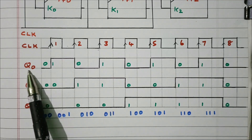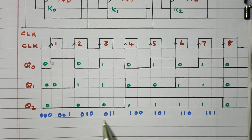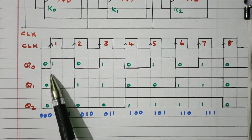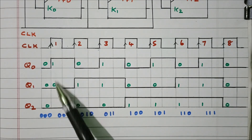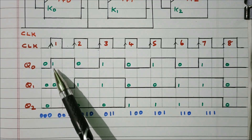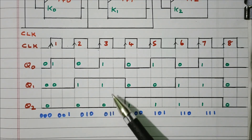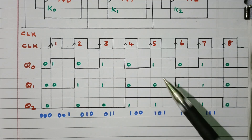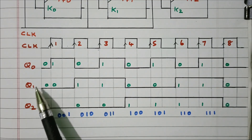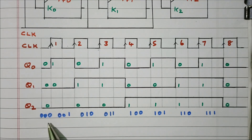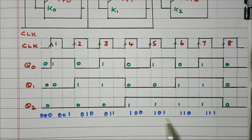So we obtained outputs Q0, Q1, and Q2. Our aim is to get counting from 000 to 111. Reading from the timing diagram: 000, then 001, 010, 011, 100, 101, 110, 111 — again reset to 000. Based on the outputs of the three flip-flops, it produces the 3-bit counting. Eight combinations are produced.